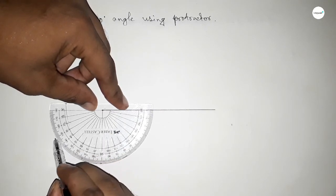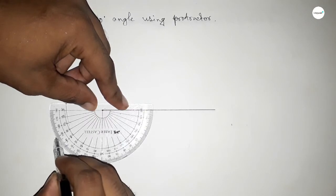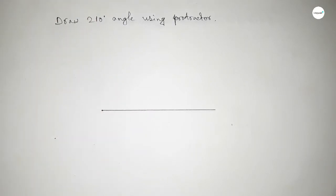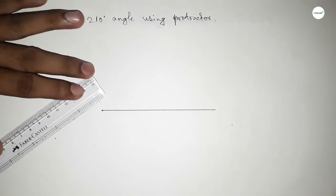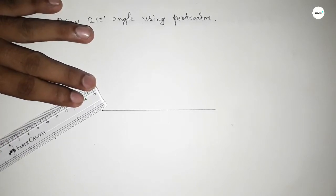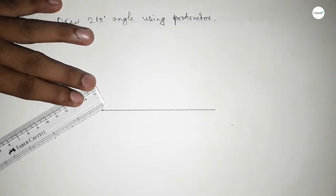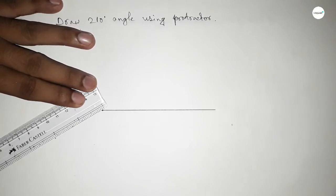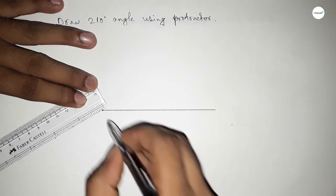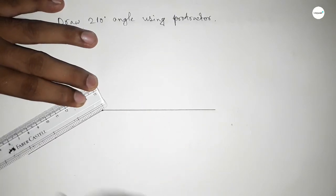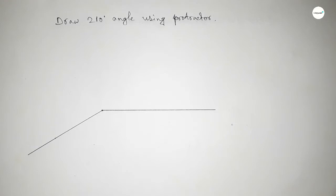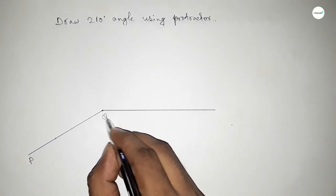Okay, now joining this line to get 210 degree angle. So first joining this line, so we got 210 degree angle by joining this. So this is P, Q, and R, and this angle is 210 degrees.